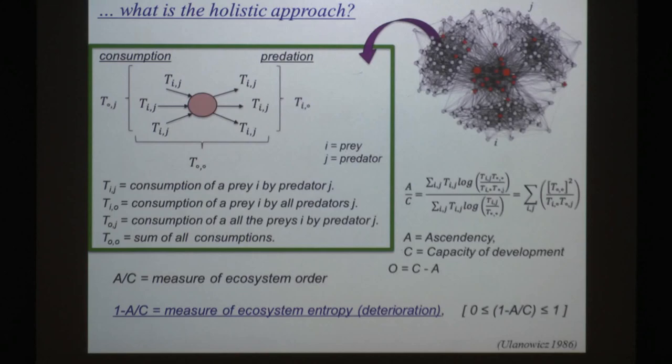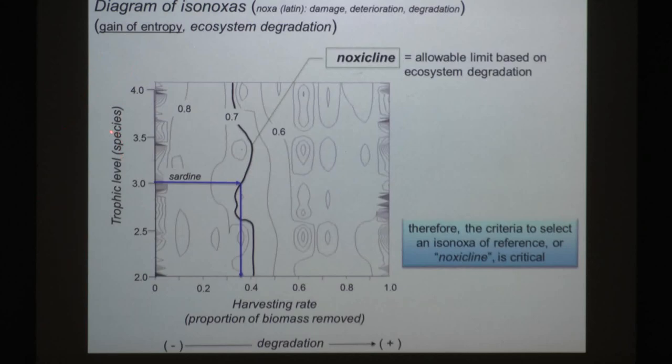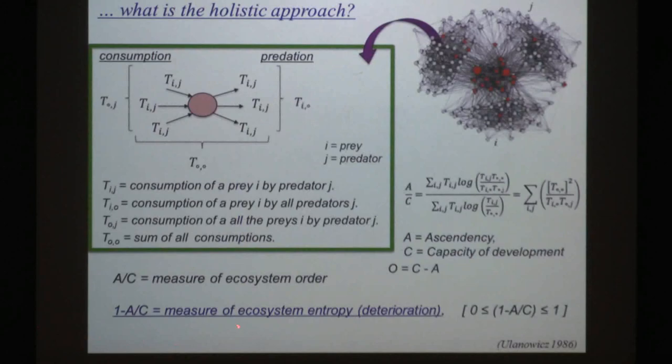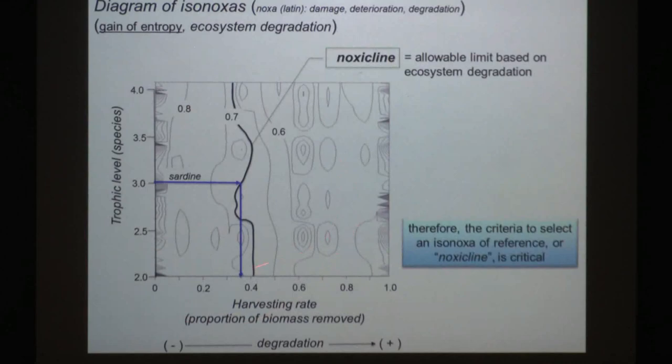With this information, we can construct these diagrams. The species represent the trophic level and the harvesting rate — the proportion of biomass removed by fishing or other causes. The isolines represent a measure of entropy. This means basically that if we increase the harvesting rate, the entropy of the system will also increase. The point is to identify an isoline that represents the limit of the biomass we can remove with an effect on the organization of the ecosystem.